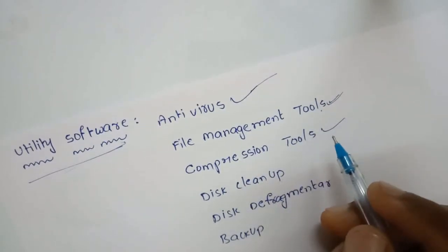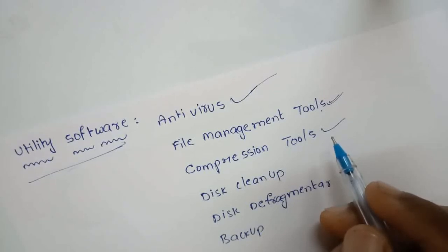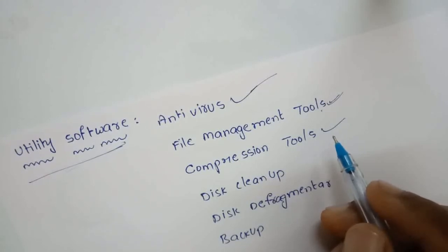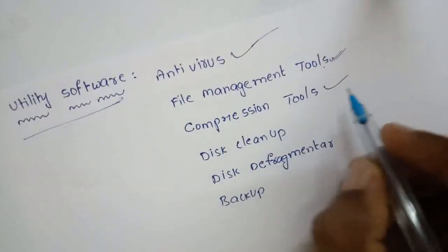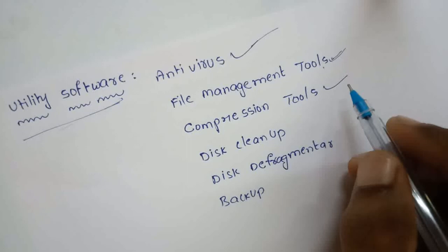Next is compression tools. Storage space is always at a premium in computer systems, so operating systems are always looking at ways to minimize the amount of storage space taken by files. Compression tools are utilities that assist operating systems in shortening files so that they take less space. After compression, files are stored in a different format and cannot be read or edited directly — they need to be uncompressed before they can be accessed. Some popular compression tools are WinRAR, 7-Zip, and WinZip.